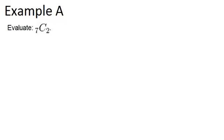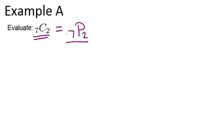Example A says evaluate 7C2. So what this means is we're choosing two objects from a set of seven. And the way we're going to do this is using our formula. So 7C2 is calculated by first thinking about 7P2 and then dividing by 2 factorial.